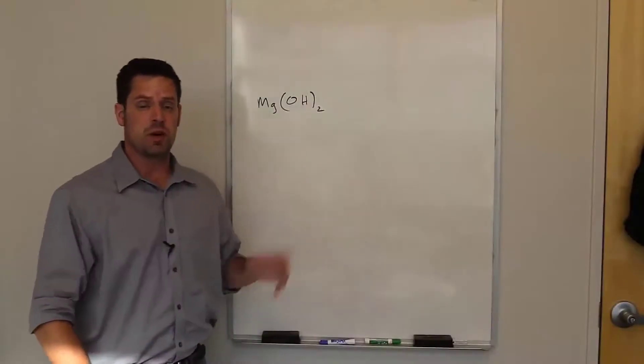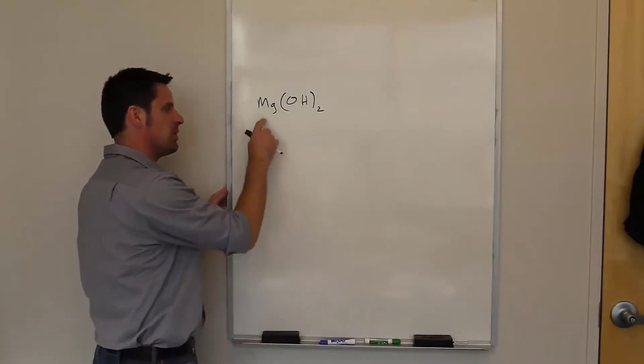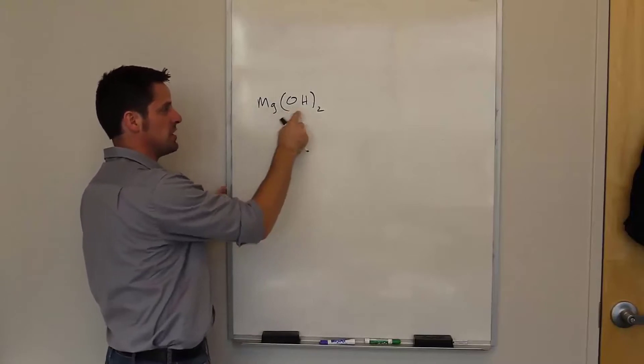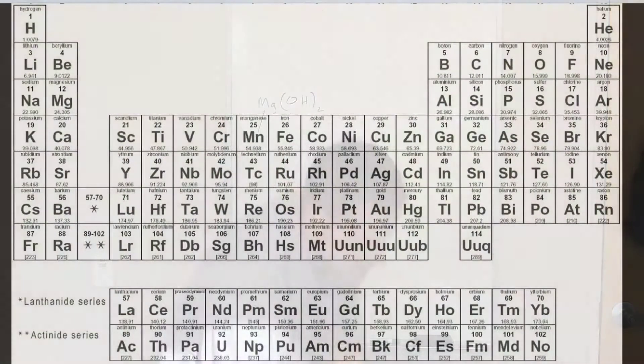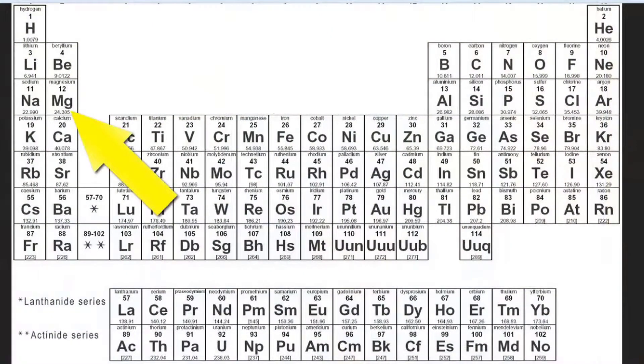To do this first one, we look at the periodic table and determine what the atomic masses are for each of these elements. Magnesium has an atomic mass of 24.31. Oxygen has an atomic mass of 16 and hydrogen has an atomic mass of 1.